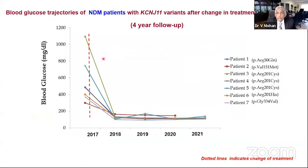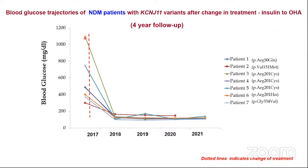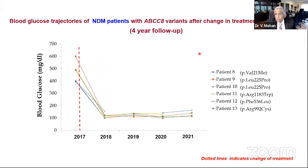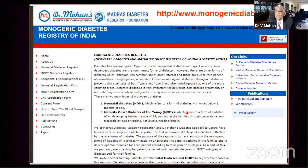This slide shows children with KCNJ11 mutations — seven different patients with seven different mutations. One child had blood sugar over 1000 mg/dL, others had 800, 400, 250–300, depending on the mutation severity. But they all respond very well: after one, two, three, four years of follow-up all blood sugars are normal on sulfonylurea. Similarly for ABCC8 mutations — different mutations, different initial blood sugar levels — but all responding beautifully after four years of follow-up.